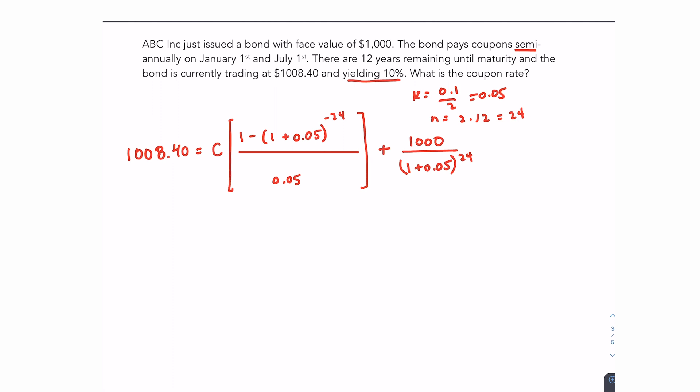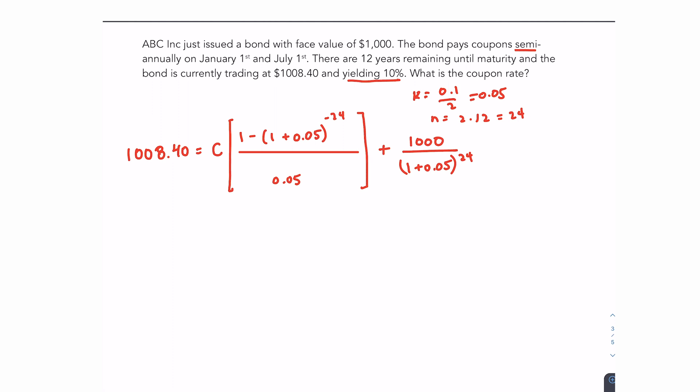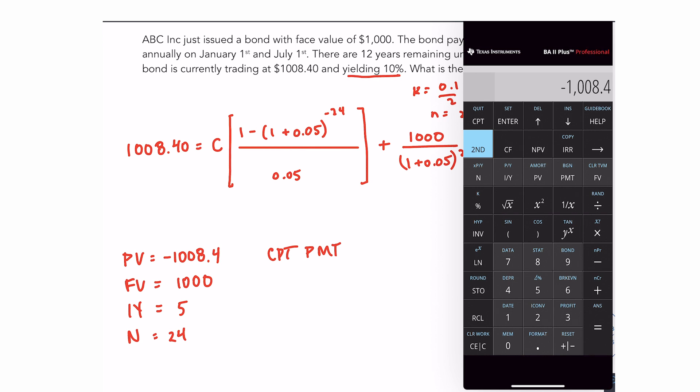And the goal here now is to algebraically solve for the coupon. If you were to do this on the financial calculator, you would set your present value to negative 1,008.4, future value to 1,000. The IY is 5. N is 24. And you'd be computing the payment. So I'll enter all this into my calculator.